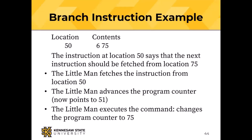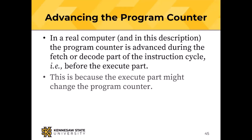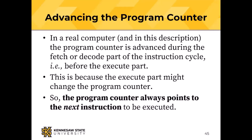Why did the little man advance the program counter right after fetching the instruction? That's the only place in the sequence where you can do it — if you did it right after execute, you'd change the 75 to a 76 and that's wrong. Advancing the program counter has to be immediately after the fetch and before you start doing anything with the instruction. In a real computer the program counter is advanced during the fetch or decode, before the execute, because the execute part might change the program counter.